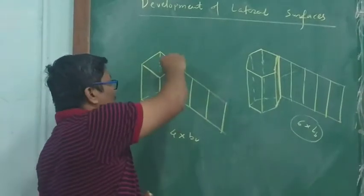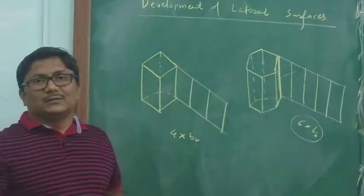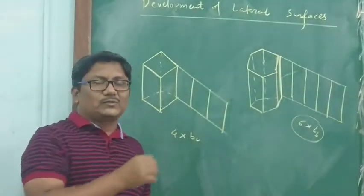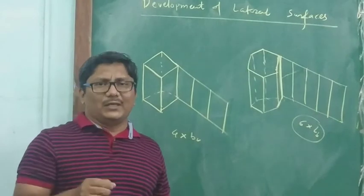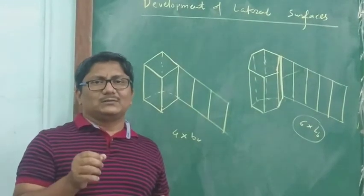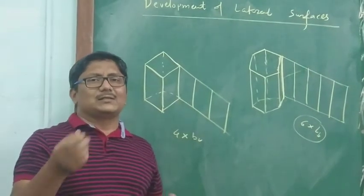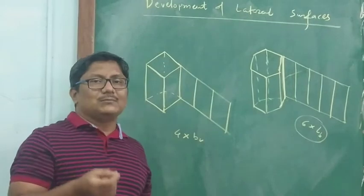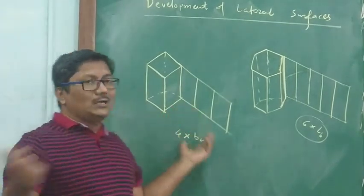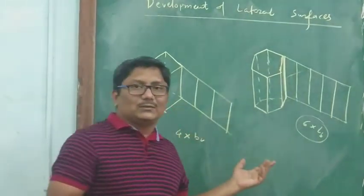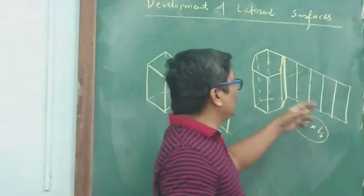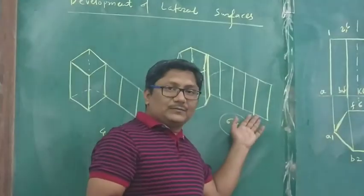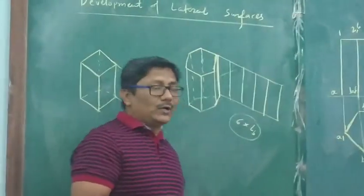This is the thickness of the prism or hexagonal prism — it is a very, very thin material, just like a plane. That is why we can open it. We are neglecting the thickness and drawing the development here.